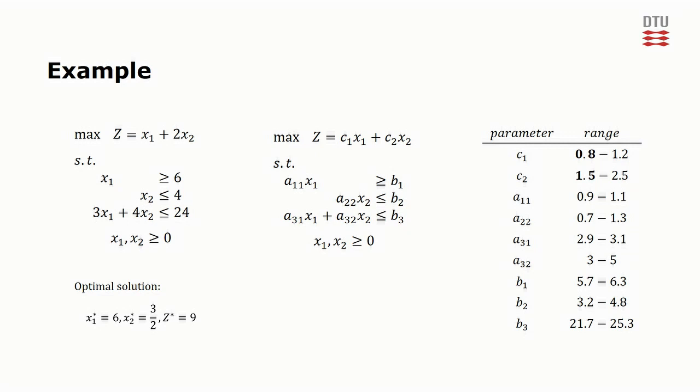The first constraint is a greater than or equal to constraint, meaning that we should choose the coefficients on the left-hand side as small as possible and the right-hand side as large as possible. The chosen values are shown in bold. Finally, the two remaining constraints are less than or equal to constraints and hence should be handled the opposite way of the first constraint.